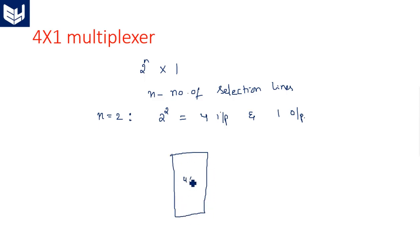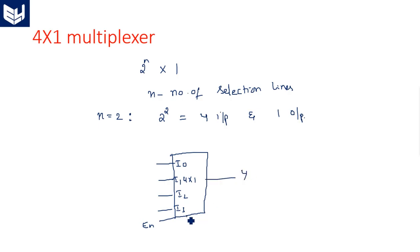This is a 4 by 1 multiplexer. The inputs are I0, I1, I2, I3. Along with these four inputs it also has an enable pin, one output Y, and two selection lines S1 and S0. The enable pin completely switches on or switches off the multiplexer.